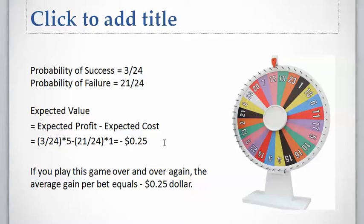This means that if we play this game over and over again, the average gain per game is going to be negative 25 cents. So if we play this game repeatedly, we will lose 25 cents per game on average.